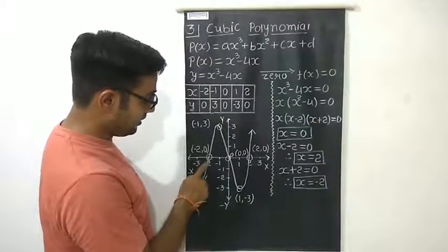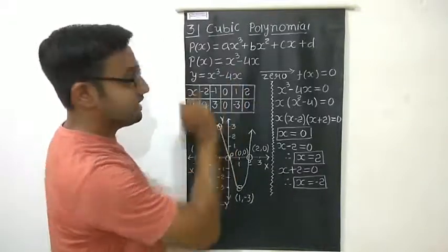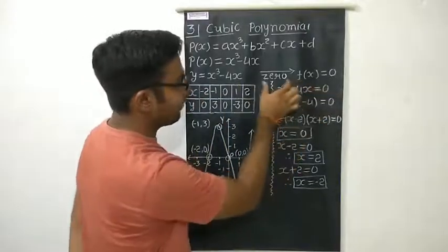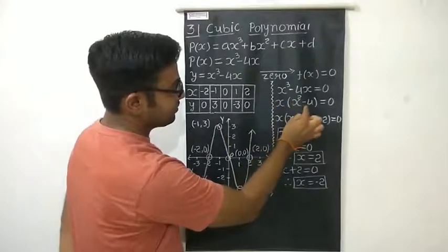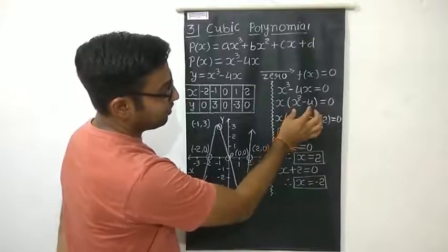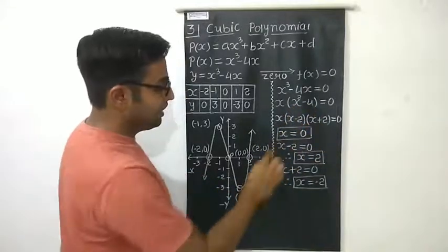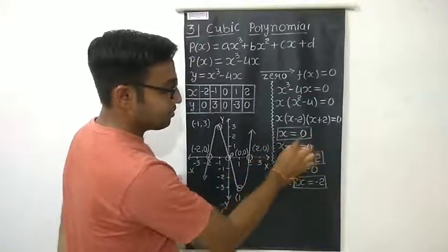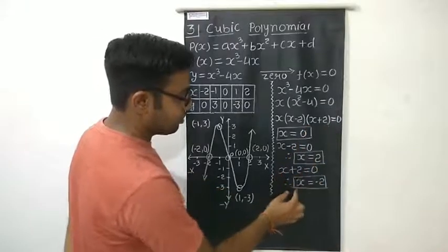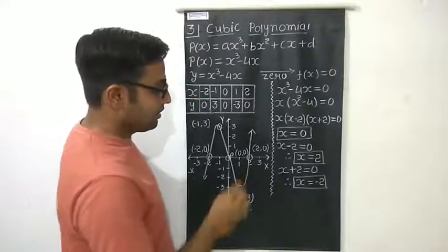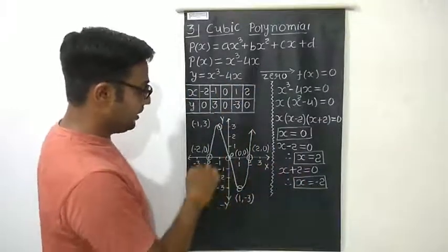We can see that this graph touches the x-axis at three different points — first, second, and third. So this polynomial has three zeros. To find them, we set f(x) = 0: x³ − 4x = 0, factoring out x gives x(x² − 4) = 0. Using the identity, x² − 4 = (x − 2)(x + 2). Comparing each factor with 0: x = 0, x = 2, and x = −2. These are the three zeros, which we can also see on the graph.